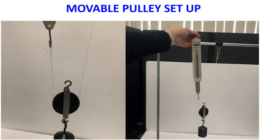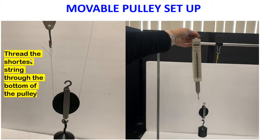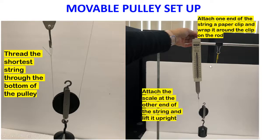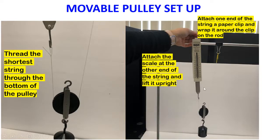Movable pulley setup: thread the shortest string through the bottom of the pulley. Attach one end of the string with a paper clip and wrap it around the clip on the rod. Attach the scale on the other end of the string and lift it upright.